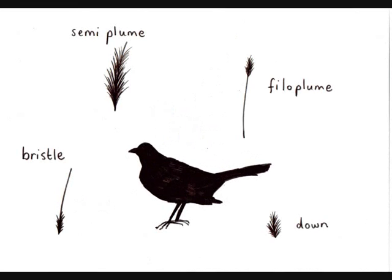Elsewhere on the body, there are other feathers that carry out different functions. Down feathers and semi-plume feathers fill in the spaces between the contour feathers. They are soft and fluffy, which means they can trap air and create a layer of insulation next to the bird's body. Filoplume feathers are typically covered by other feathers and function as pressure and vibration receptors. Bristle feathers are stiff and occur mostly around the base of the bill and around the eyes.